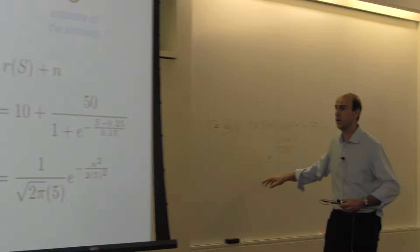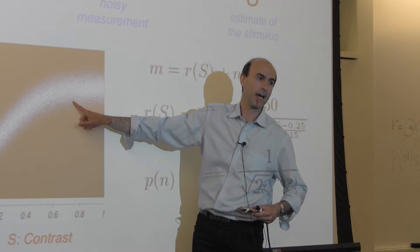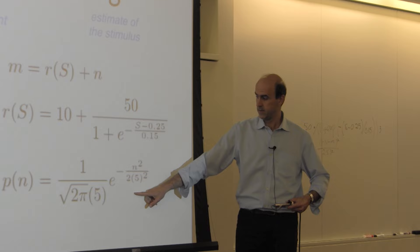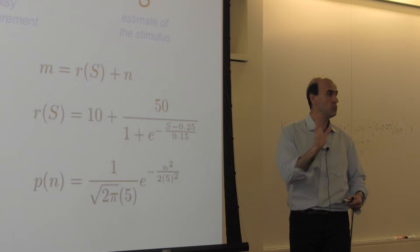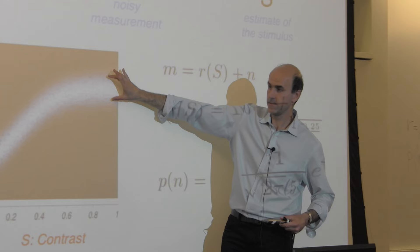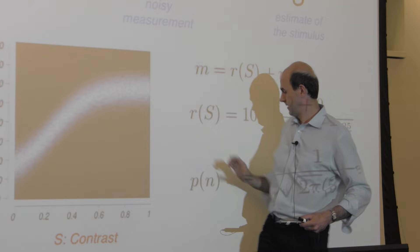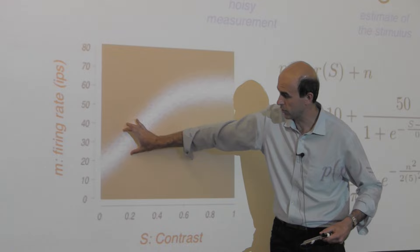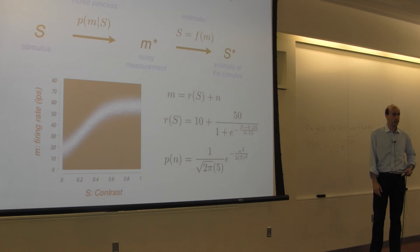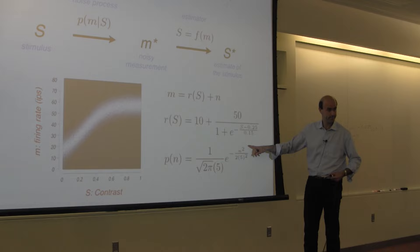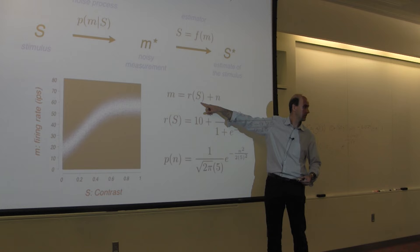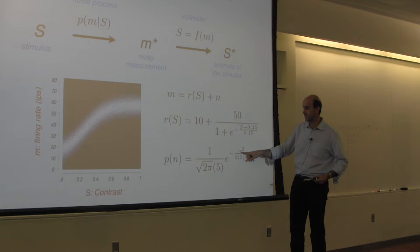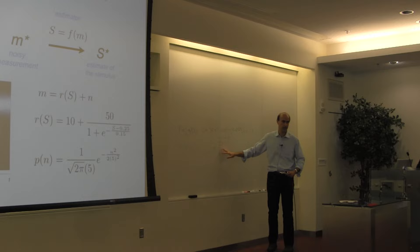If I write that, I have basically written the likelihood, because the likelihood relates stimuli to measurements. We know the shape of this noise is Gaussian. So any point you get here is basically the same function, except it has moved to the appropriate mean. When it's put at different locations along the stimulus axis, it looks like this function shifted. To write it: you rewrite this function. Think about N — rearranging the equation, N is M minus R(S). So the only thing I need to do is to put, instead of N, the term M minus R(S). That's all.